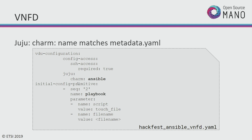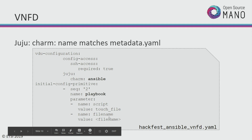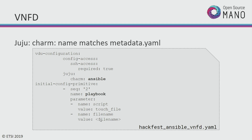Here it is inside the VNFD. The charm itself is called Ansible. The name of the primitive is "playbook", which corresponds to the action file that we created. The script is going to be "touchfile", which is basically a file called touchfile.yaml — the Ansible playbook that will be executed. We can also pass variables through to the Ansible scripts to run — just name-value pairs. You can specify as many different variables as you want for your Ansible playbook to execute.